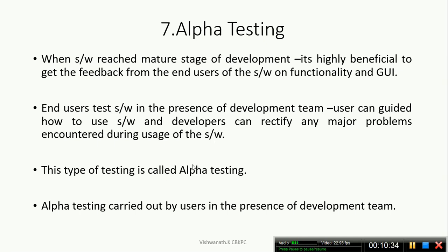This type of testing is called Alpha Testing. In Alpha Testing, end users test the application in the presence of the development team. The key benefits: users can be guided on how to use the software, and developers can rectify major problems encountered during testing.